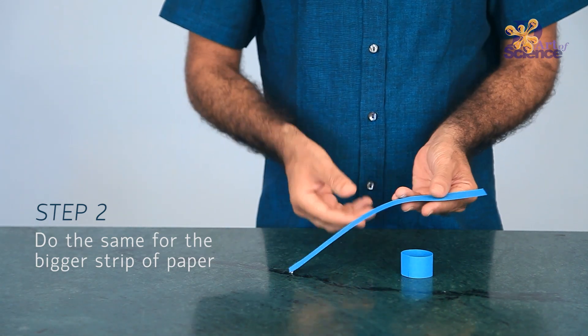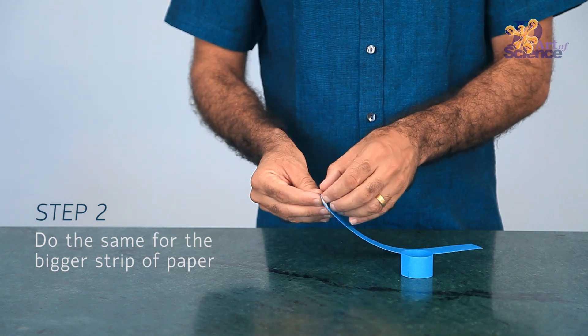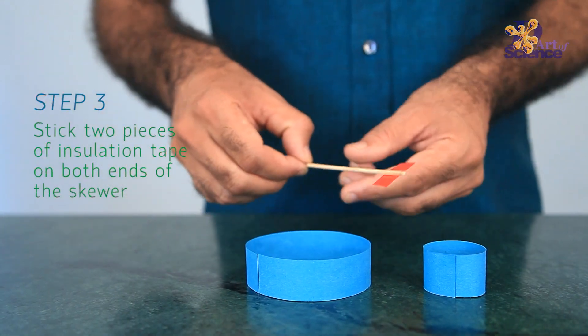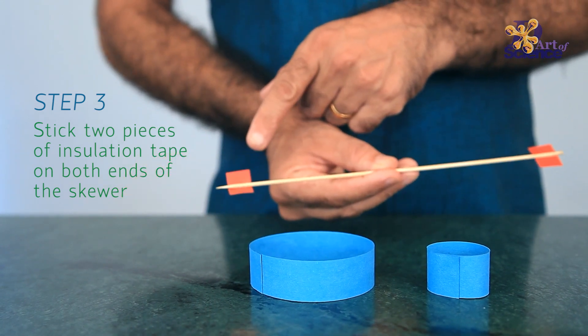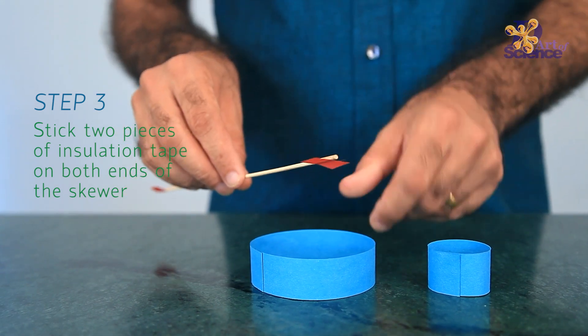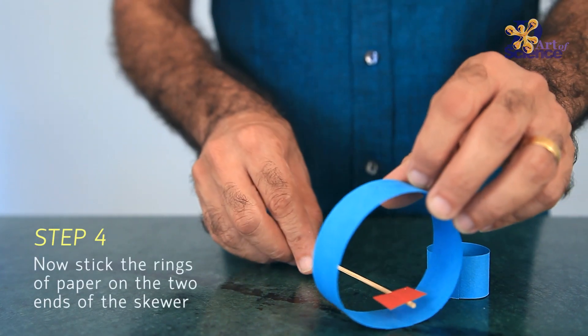But that's not all. The smaller hoop that we made before is responsible for maintaining the direction of our hoopster plane as it zooms through the air. The small hoop makes sure that the plane stays on course.